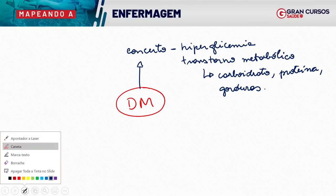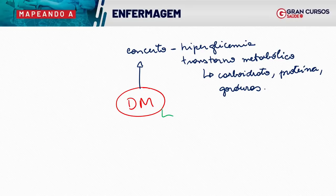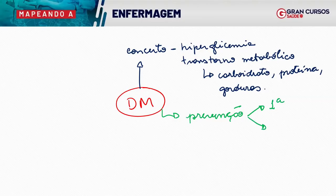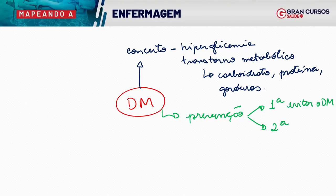Além dessa parte de conceito, a gente precisa lembrar do diabetes em relação à prevenção. Vamos ter a prevenção primária e a prevenção secundária. A prevenção primária vai evitar a doença, evitar o diabetes. Então aqui se inclui mudança de estilo de vida: dieta, exercício, evitar tabaco, evitar álcool, e aleitamento materno, tanto prevenindo o diabetes materno como o do bebê.